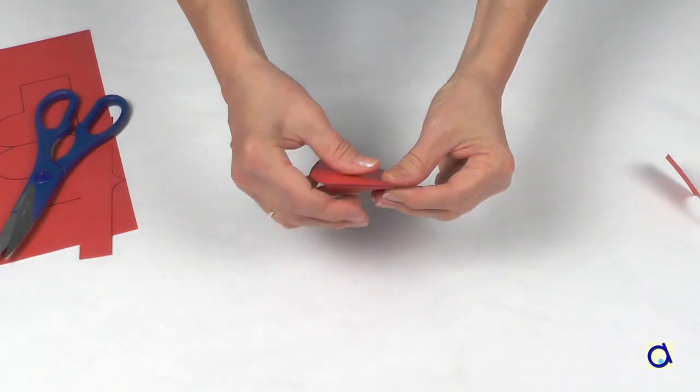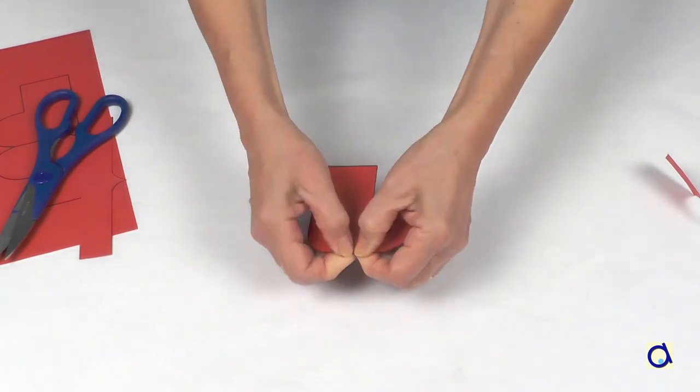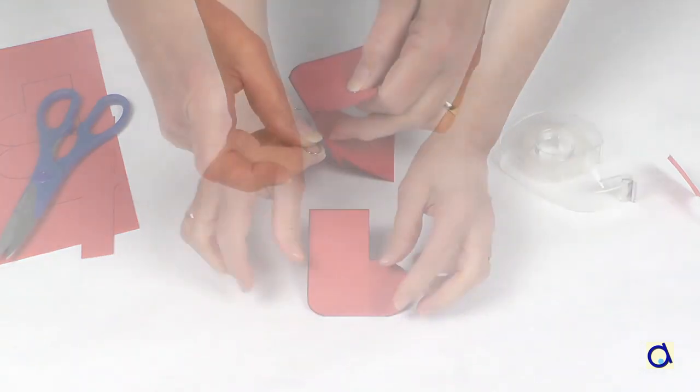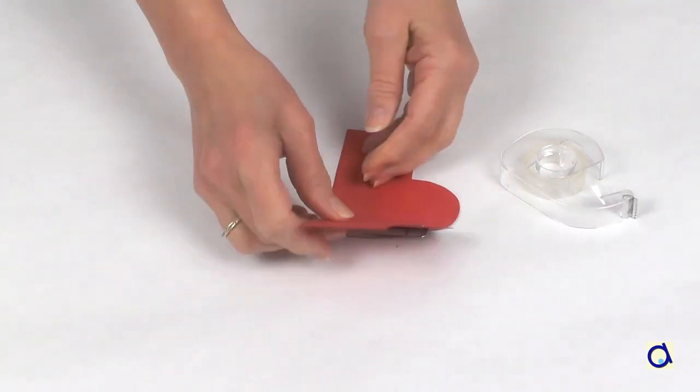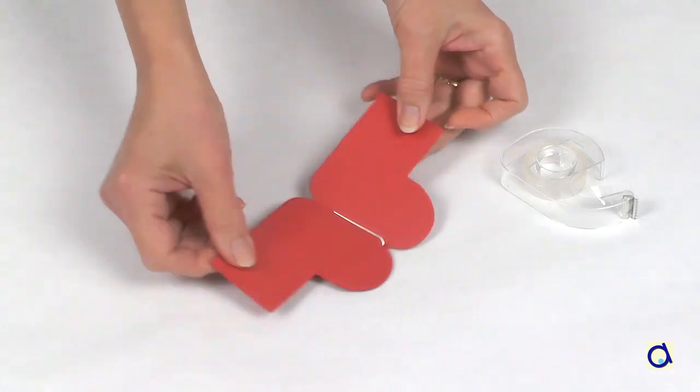Fold it in half so that both sides overlap exactly. Take a large paper clip to represent the blade of the skate. Slide the paper clip into the fold of the skate.